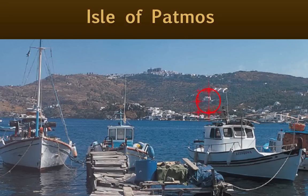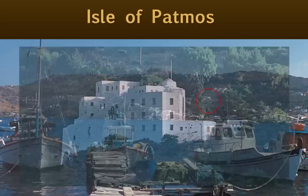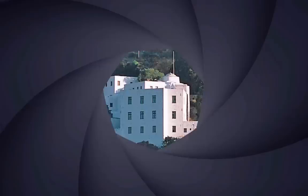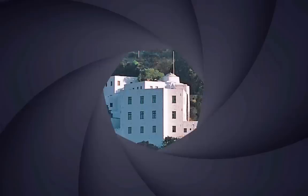The Isle of Patmos, where John is said to have penned the Apocalypse. Just below and to the left of this seminary is the edifice which marks the entrance to the Grotto of the Apocalypse, the cave in which John is believed to have received his apocalyptic visions. And here's the mosaic above the entrance to the Grotto of the Apocalypse. It depicts St. John receiving the revelation from God and dictating it to his disciple, Prochorus.